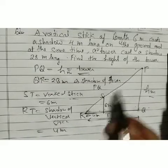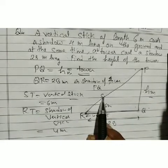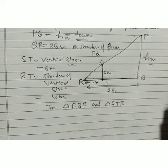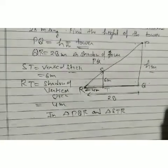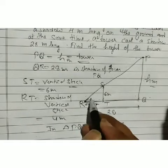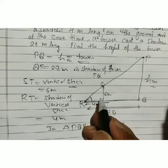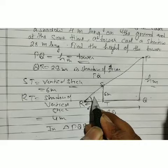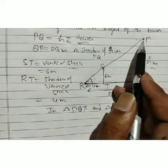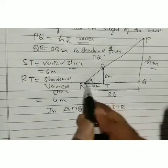In triangles PQR and STR, angle R is common (angle PRQ = angle SRT). Also, angle PQR = angle STR = 90° (since the tower and stick are vertical). So two angles are equal.